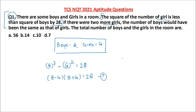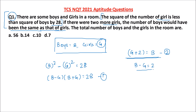If there were two more girls — so initially we have assumed G girls — if there were two more girls, the number of boys would have been the same as that number of girls. So if two more girls join, the number of girls and boys will become the same. That is my equation 2: G plus 2 equals B, which gives B minus G equals 2. Into B plus G, we do not know, equals 28.